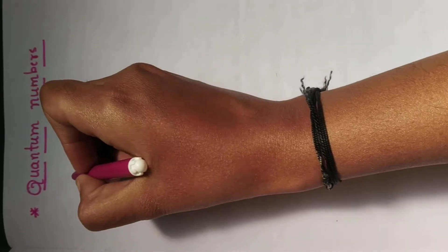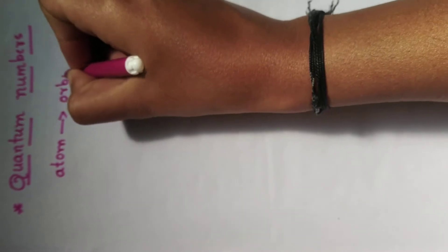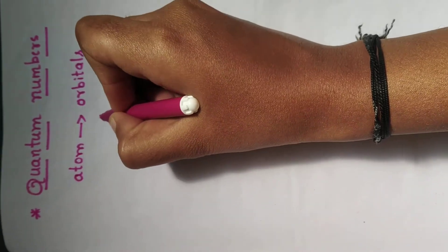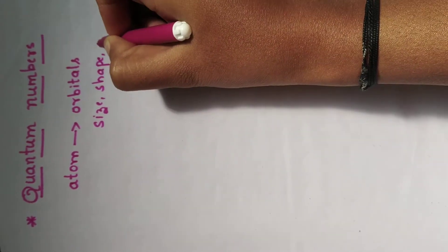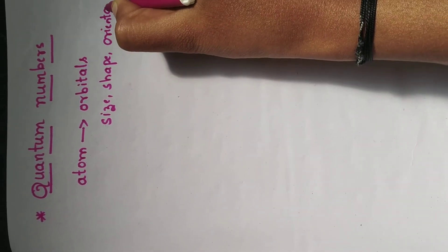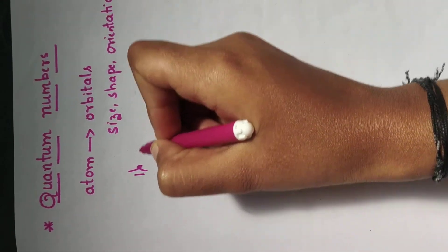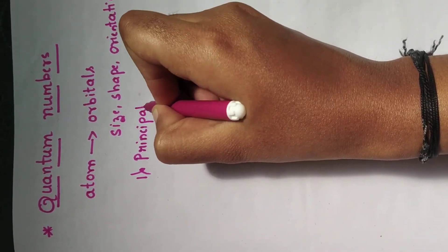Hello guys, in today's video we shall study about types of quantum numbers. An atom consists of a large number of orbitals. These orbitals may have different size, shape, and orientation. These can be studied by the following three quantum numbers: the principal quantum number, the azimuthal quantum number, and the magnetic quantum number.